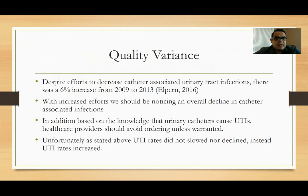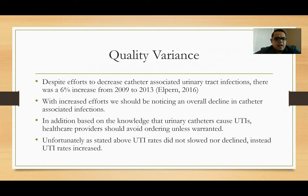The quality variance. Despite efforts to decrease catheter-associated urinary tract infections, there was an overall increase of about 6% from 2009 to 2013. I believe that with increased efforts we should be noticing an overall declining rate of catheter-associated infections. Based on the knowledge that urinary catheters cause UTIs, healthcare providers should avoid ordering catheters unless warranted. Unfortunately, UTI rates did not slow down nor decline — instead, the UTI rates increased.